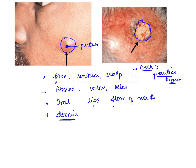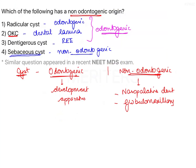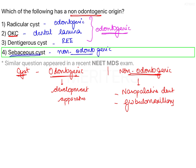Getting back to the question: out of the four options, radicular cyst, OKC, and dentigerous cyst are odontogenic in origin. The only non-odontogenic cyst given here is option 4, sebaceous cyst, and therefore it is the correct answer.